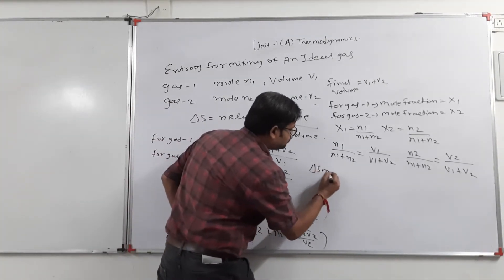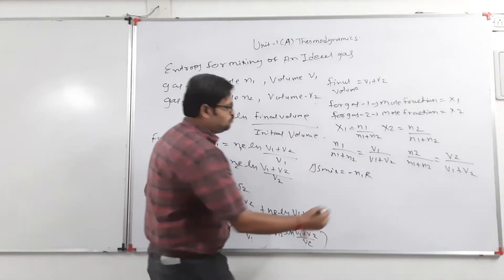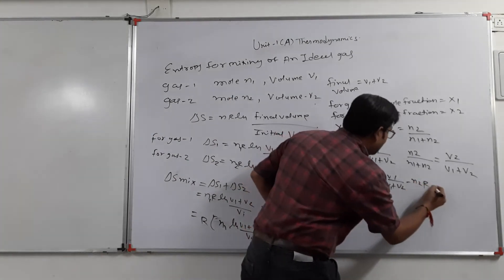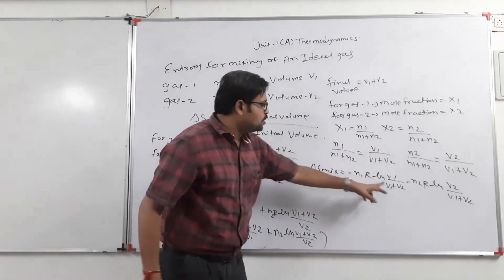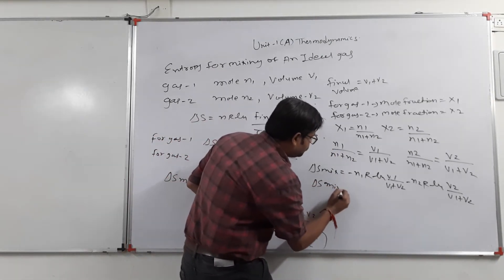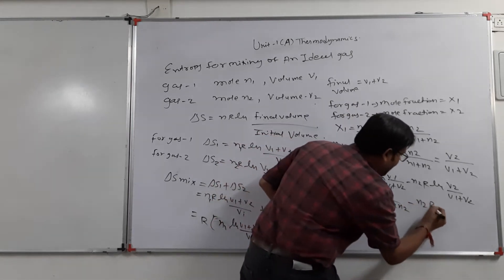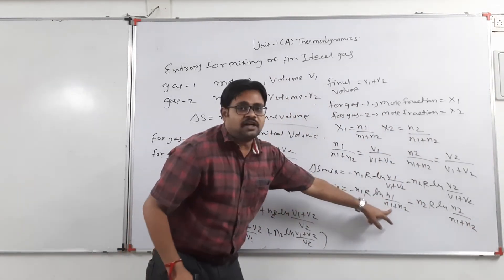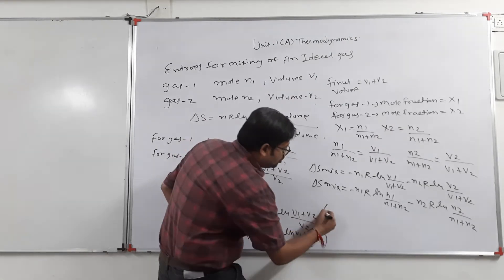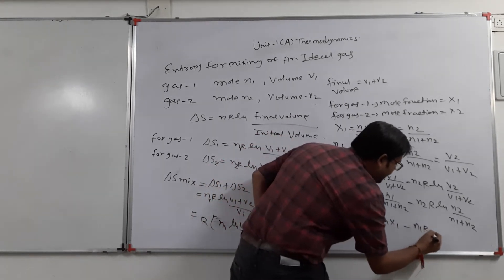So the equation becomes: delta S mixing = -n1 R ln(V1 / (V1 + V2)) - n2 R ln(V2 / (V1 + V2)). Since V1/(V1+V2) equals n1/(n1+n2) = x1 and V2/(V1+V2) equals n2/(n1+n2) = x2, we substitute these mole fractions.